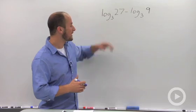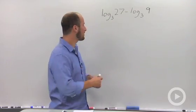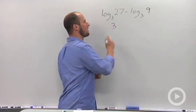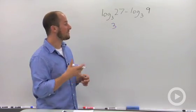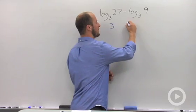Log base 3 of 27—so saying 3 to what power equals 27? We know that to be 3. Log base 3 of 9—saying 3 to what power equals 9? 3 squared, so this is going to be 2.